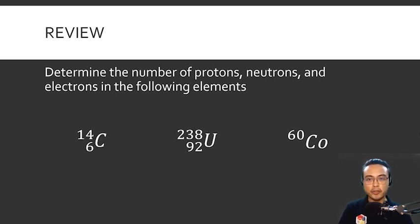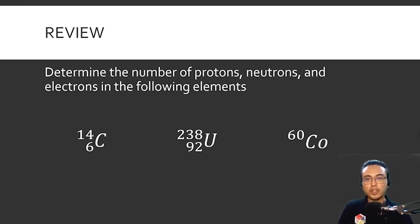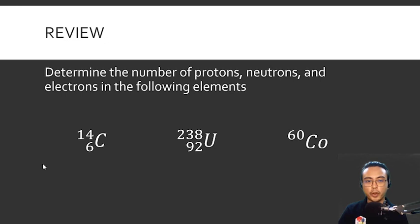Before we proceed to the basics of nuclear chemistry, let's first have a little review. We want to determine the number of protons, neutrons, and electrons in the following elements: carbon, uranium, and cobalt. There are numbers at the top and at the bottom of each element symbol. The number at the bottom represents the atomic number. Carbon has atomic number 6, uranium is 92, but cobalt has no number shown, so we look at the periodic table.